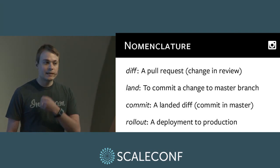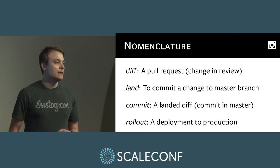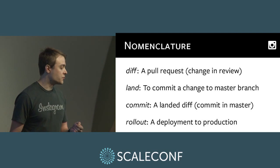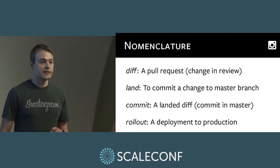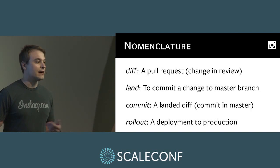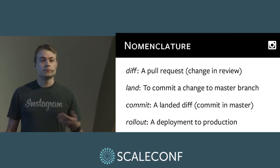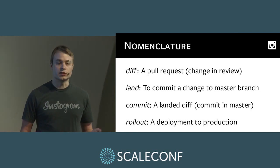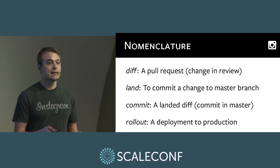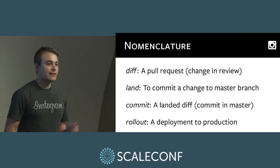A quick bit of nomenclature before we get started. The term 'diff' refers to a pull request — a proposed change currently in code review. The term 'land' refers to committing a change to master. A 'commit' is a diff which has been landed — the commit now in the master branch. A 'rollout' is a deployment to production; I use 'rollout' and 'deploy' interchangeably. So the flow is: engineer puts up a diff, it gets accepted, he lands the diff, that results in a commit to master, and that then gets deployed.